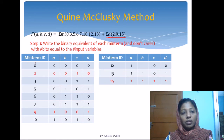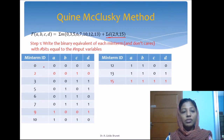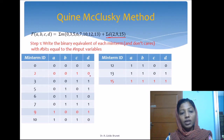We have listed out all the minterms and the don't care terms and written their binary equivalents. The don't care terms are highlighted, though it is not necessary to differentiate don't care minterms from the function minterms until the last step. So 0 is represented as 0, 0, 0, 0 and 2 is the don't care term represented as 0, 0, 1, 0. We have written both minterms and don't care terms in ascending order.